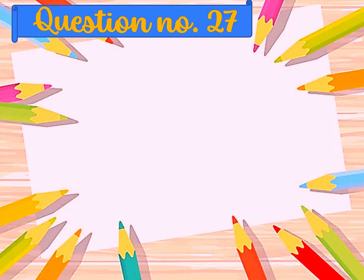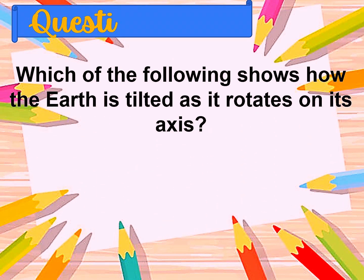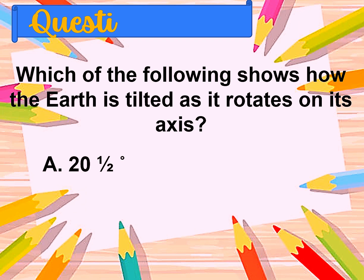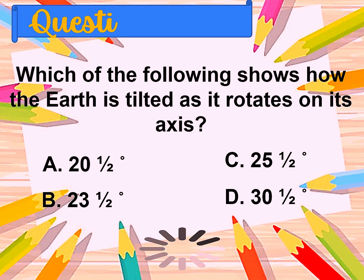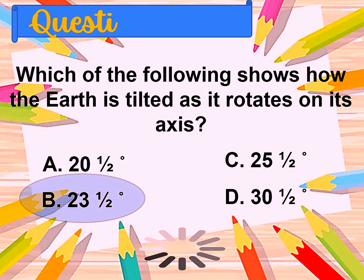Question number twenty-seven: Which of the following shows how the Earth is tilted as it rotates on its axis? A. Twenty and a half, B. Twenty-three and a half, C. Twenty-five and a half, D. Thirty and a half. The correct answer is twenty-three and a half degrees.